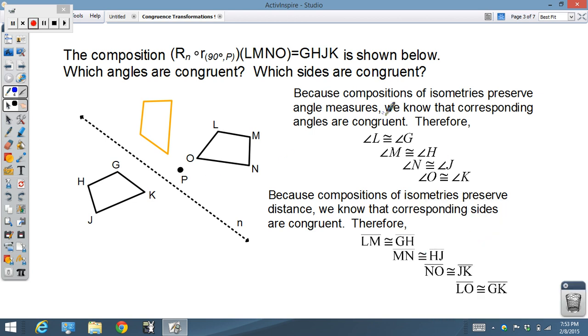So now because we know that compositions of isometries preserve angle measures, we know that the angle measures of the corresponding figures in their corresponding orders must be congruent. O must be congruent to K, L to G, etc. You can read along with it right there. We know those figures must be congruent because both of those steps, the rotation and the reflection, have to preserve angle measures.